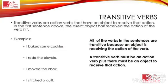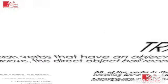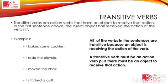A transitive verb is an action verb that has an object to receive that action. For example: I baked some cookies, I rode the bicycle, I moved the chair, and I stitched a quilt. All of the verbs in these sentences are transitive because an object is receiving the action of the verb. A transitive verb must be an action verb, and there must be an object to receive the action.